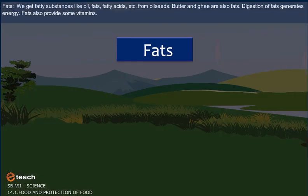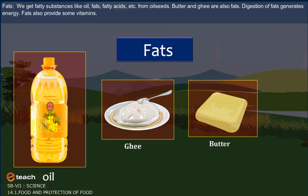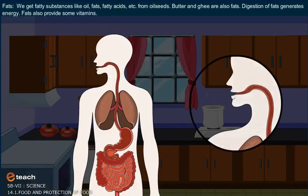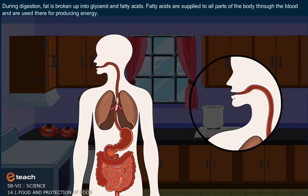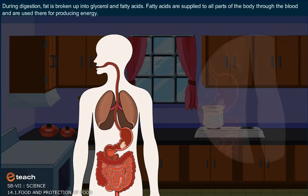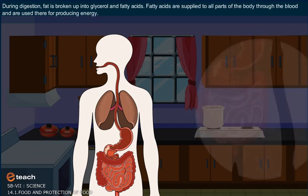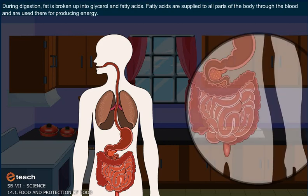Fats. We get fatty substances like oil, fats, fatty acids, etc. from oil seeds. Butter and ghee are also fats. Digestion of fats generates energy. Fats also provide some vitamins. During digestion, fat is broken up into glycerol and fatty acids. Fatty acids are supplied to all parts of the body through the blood and are used there for producing energy.